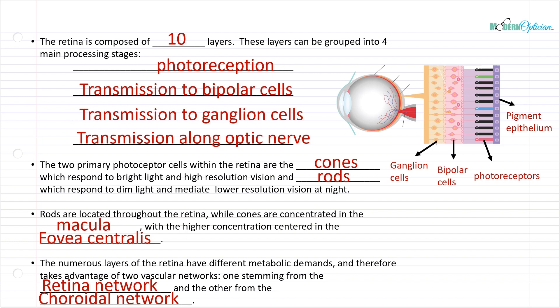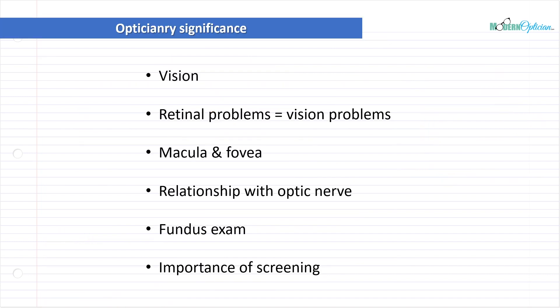I can't stress enough that the macula and the fovea centralis are the most important parts when it comes to vision. The retina is a whole structure involved in vision, but the most important part is the macula and the fovea — and that's because they have the highest concentration of cones. Cones are responsible for our high-definition, daytime vision. Without them, vision would be very difficult. We didn't go super deep into this — you could do hours of lectures on the retina — but at the end of the day, it's not going to help us be better at our job. We just need to understand what the structures do, why they're important, and why they matter to us as opticians.